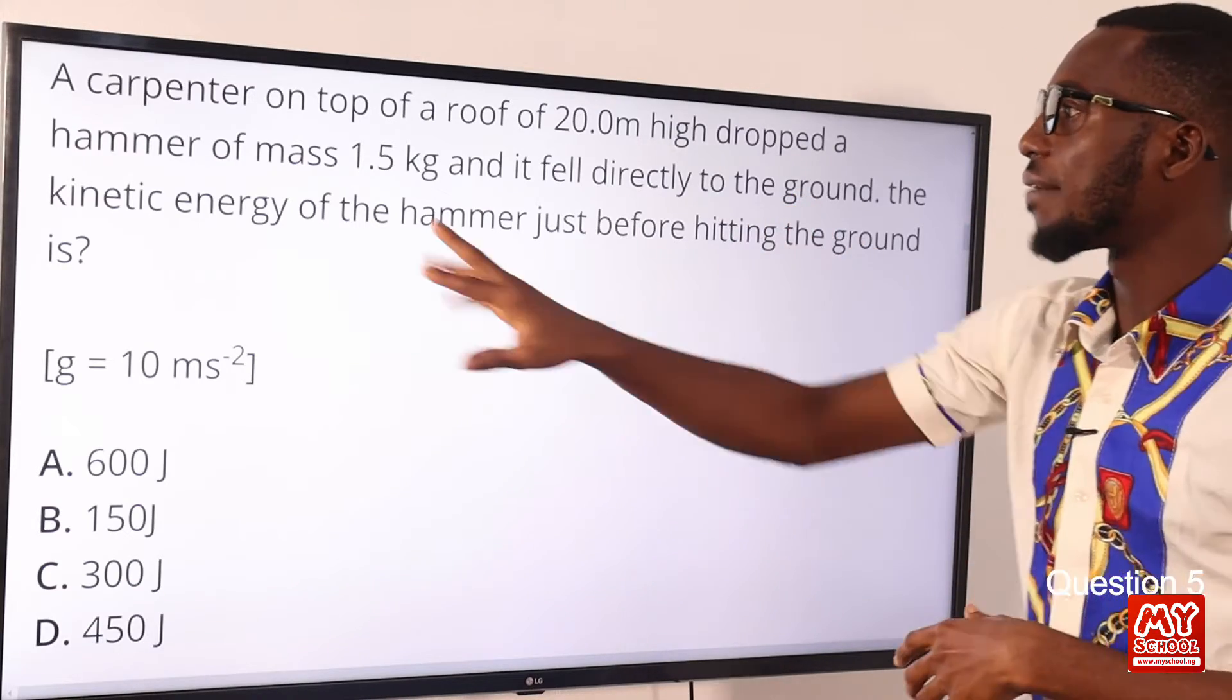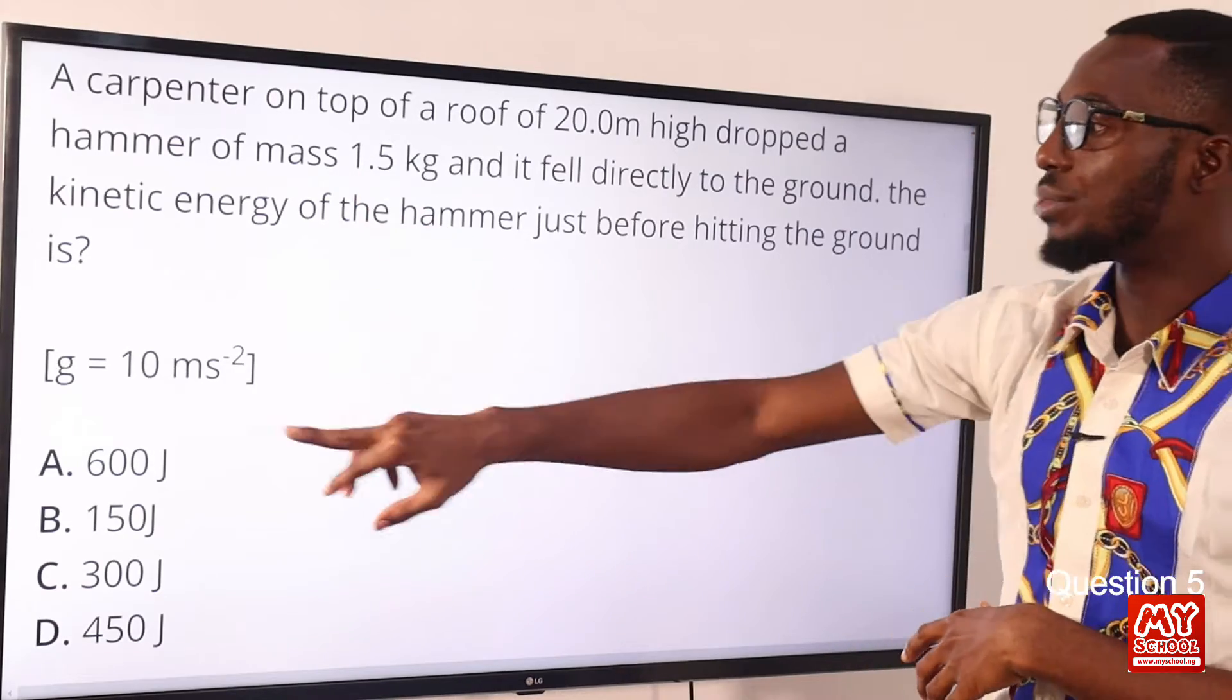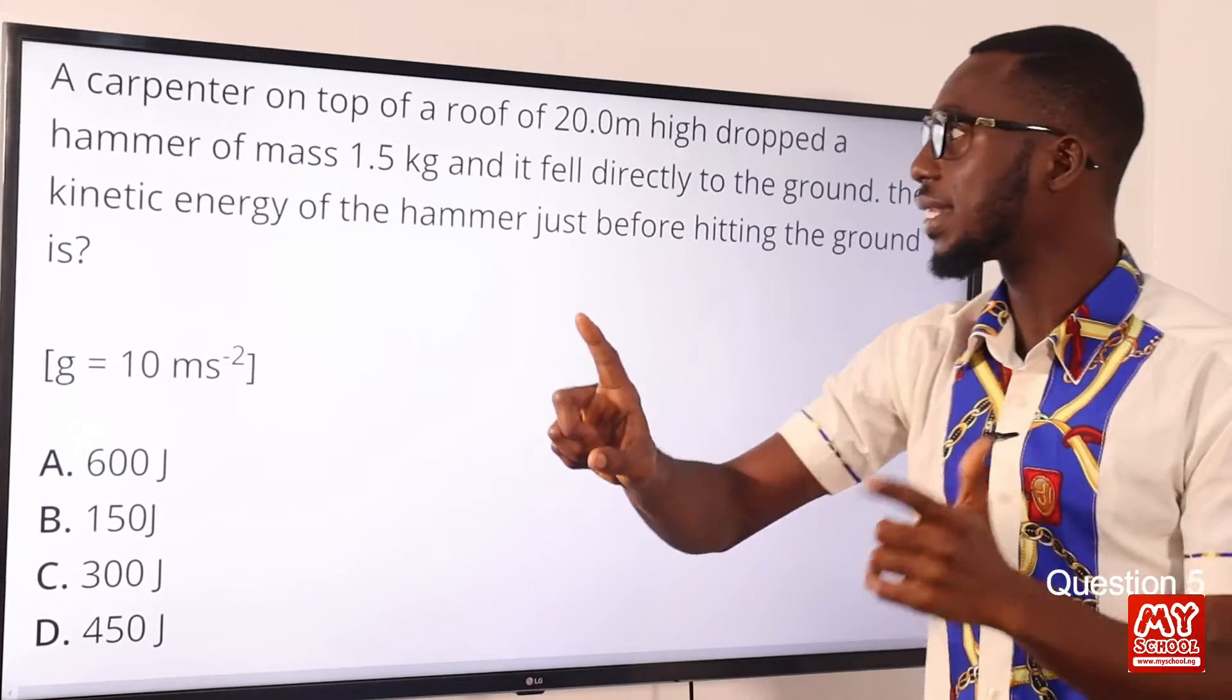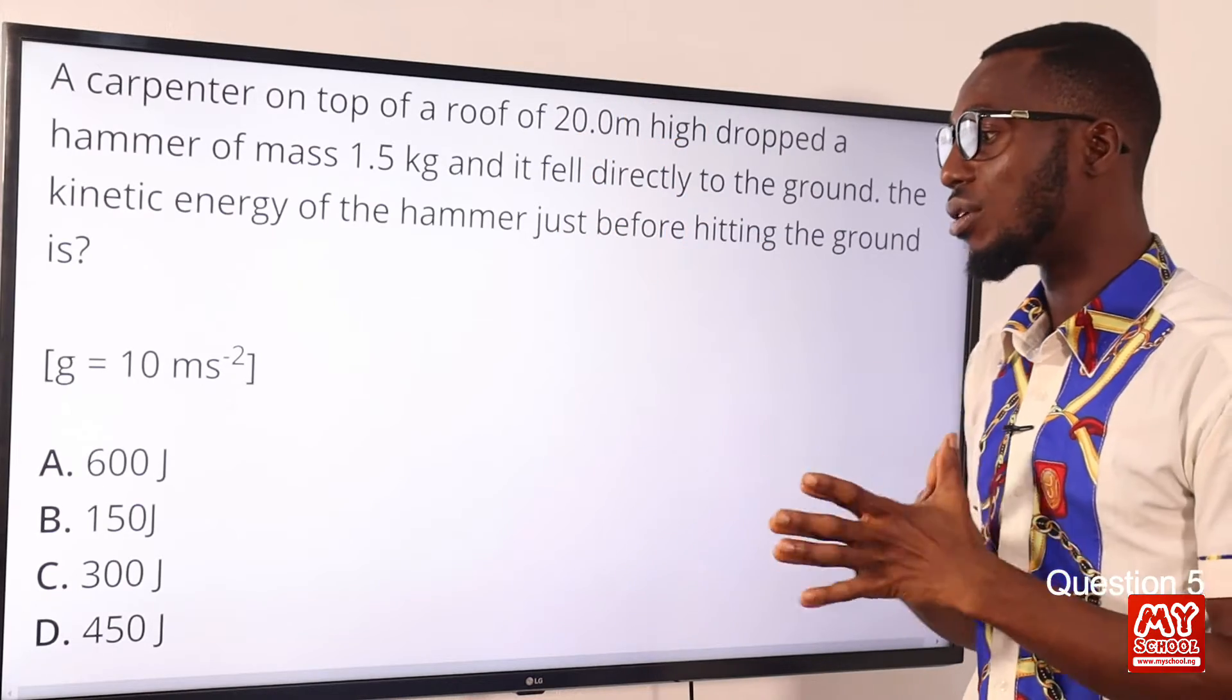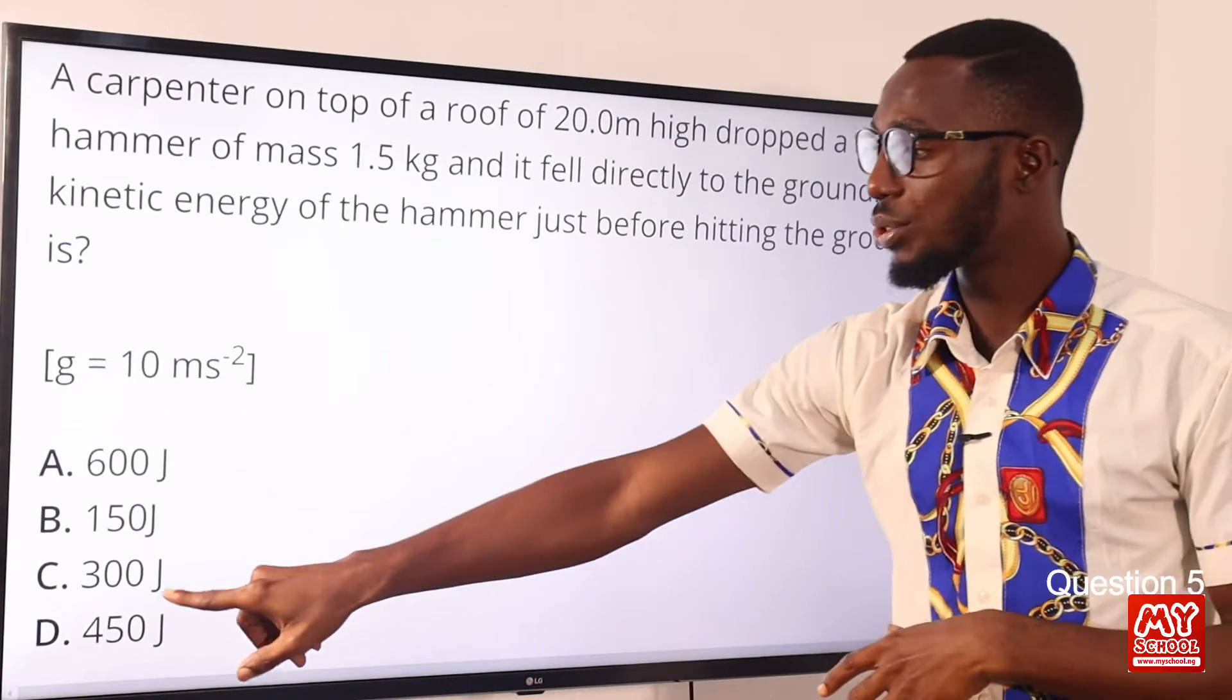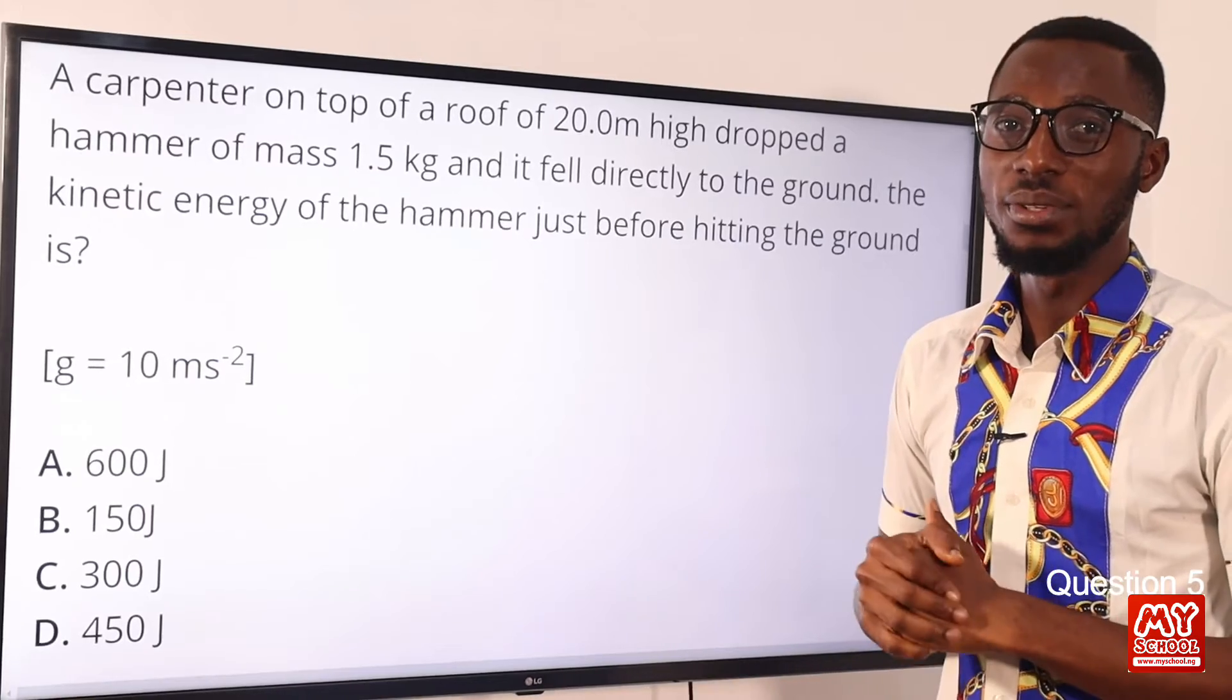There are different approaches to tackling this question, but I'm going to use this MGH. So we have M as 1.5 times G, that is 10. So 1.5 times 10, that is 15. So 15 times 20, that gives you 300 joules. So the correct option here is option C for 300 joules.